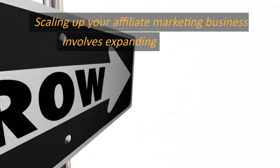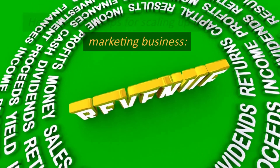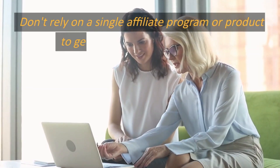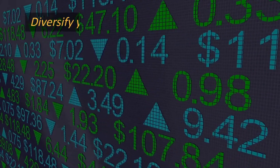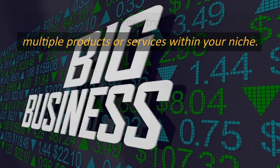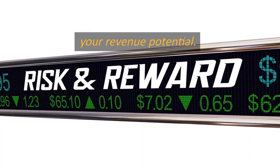Scaling up your affiliate marketing business involves expanding your reach, increasing your revenue, and building a sustainable business. Diversify your income streams: don't rely on a single affiliate program or product to generate all of your revenue. Diversify your income streams by promoting multiple products or services within your niche. This will help you spread your risk and increase your revenue potential.